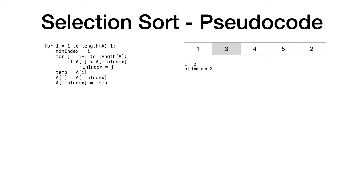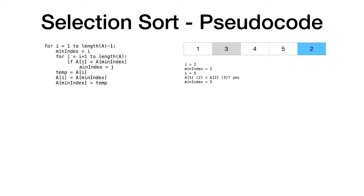The left-hand subarray consists of just one element and this is in sorted order. The right-hand subarray from I onwards is still in unsorted order. I is two and minindex is two. We search through the right-hand side of the subarray looking for a smaller element, if one exists. Is four less than three? No, so we don't need to update the minindex. Finally, is two less than three? Yes, so we update the minindex. The inner loop has reached the end of the array, so we exit the inner loop and we perform the swap.